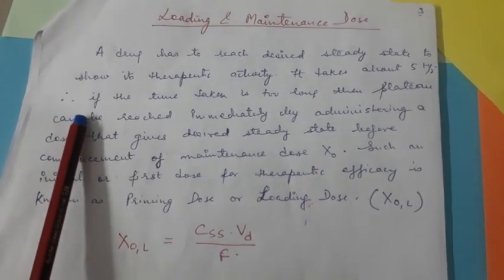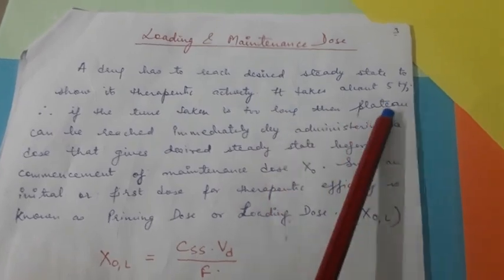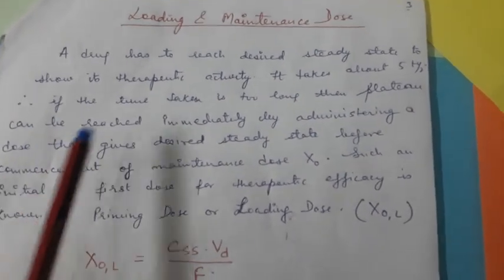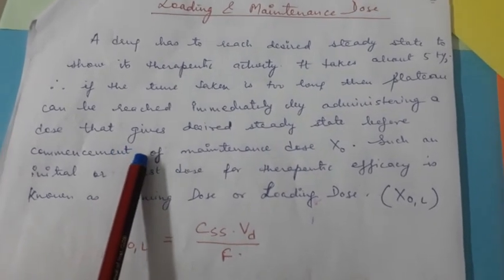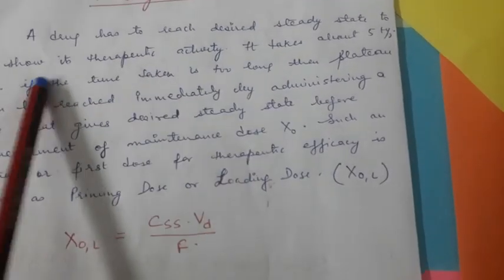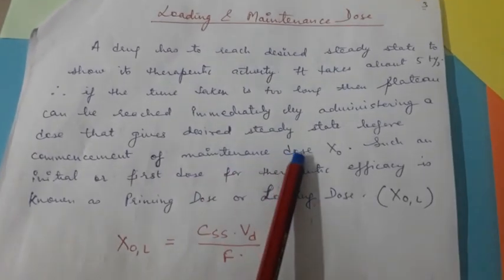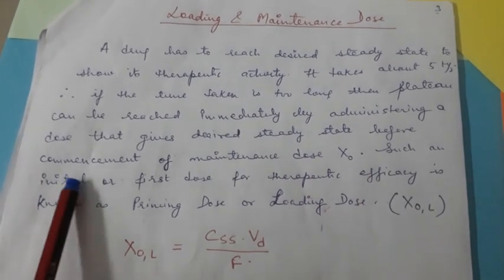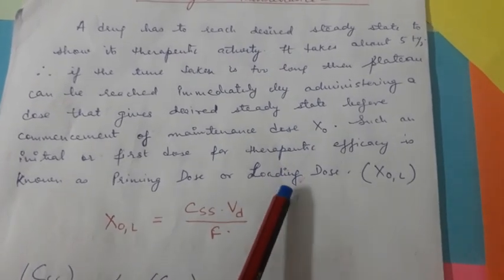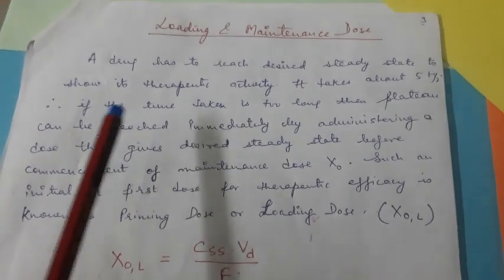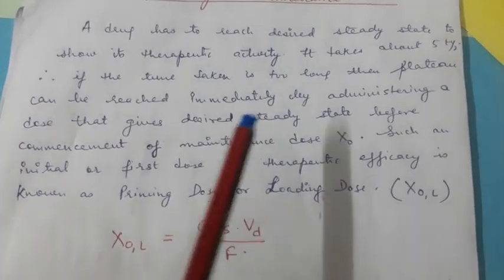Ab suppose kisi drug ko bohut zyada time lag raha hai plateau ya steady state ko reach karne mein, tab humare paas kya option hai? Hum wait karte rahein - utna time tag nahi - toh hum kya karte hain ki us steady state ko pahunchane ke liye ek help le lete hain: us dose ki jo sirf ek carrier ka kaam kare, usko steady state tak lane ke liye. Kuch ek dose de di humne jo seedha steady state pe lati hai, uske baad ka kaam karti hai maintenance dose. Yeh initial first dose kahlati hai priming dose ya loading dose.